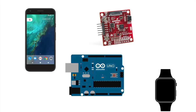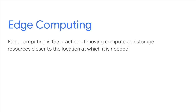Edge computing is basically the practice of moving compute and storage resources closer to the location at which they are needed — that is where edge devices come into picture. John had two options to deploy his model: on cloud or on the device. Many might assume a model running on a server with a large GPU is better, but the truth is edge devices have become an important platform for machine learning.